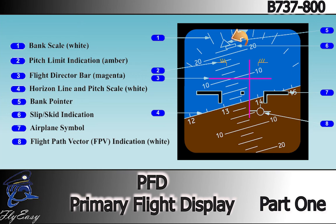At bank angles of 35 degrees or more, the bank angle pointer and slip and skid indicator turn amber. If at the same time the slip and skid indicator is at full scale deflection, it will display filled amber.